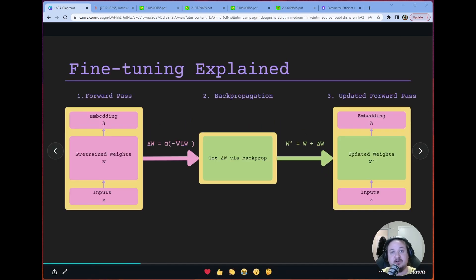In order to understand LoRa, we first have to understand what fine tuning is. Fine tuning is the process by which we pass data through our pre-trained network and then we update the weights based on the weight updates that we get from back propagation. So it's just like training, but we're doing it with these pre-trained models. Very straightforward. A lot of you might already understand this, but let's just walk through this process.